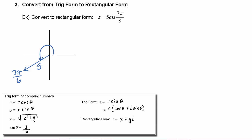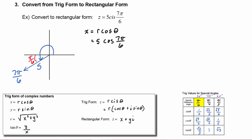Now using our definitions, we can do the conversion. We know that x is equal to r cosine of theta, which is five times the cosine of seven pi over six. We know that our reference angle is pi over six, so the value for cosine is going to be radical three over two, and in quadrant three we know cosine is negative. So this is going to be five times negative radical three over two, which is equal to negative five radical three over two — and that is our x value.